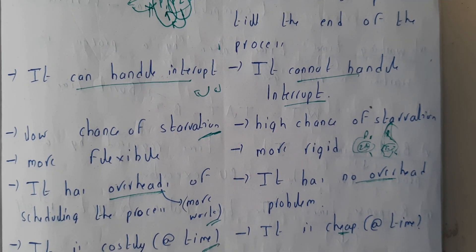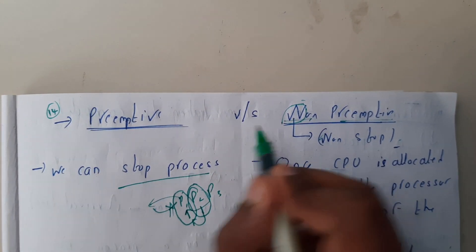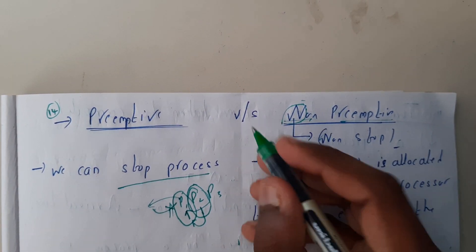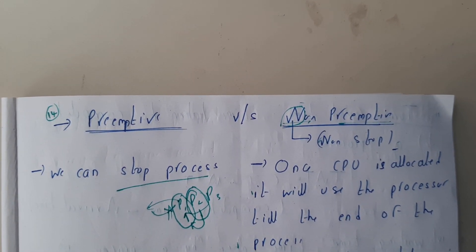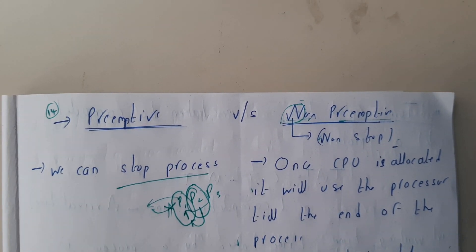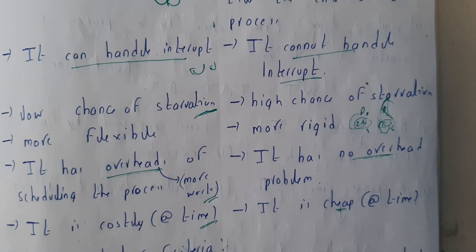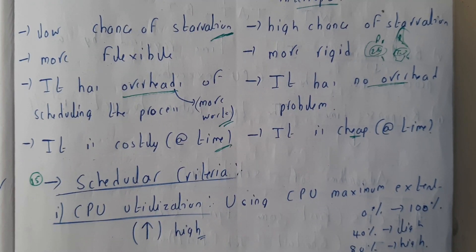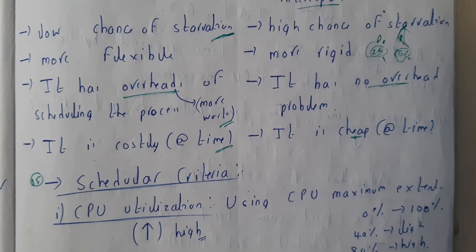I hope everyone got a clear idea on preemptive and non-preemptive. You need to learn this because in exam questions involving an algorithm, they'll say things like 'using preemptive round robin' or 'round robin without preemptive' — so you need to know what these words mean. That's why I covered the differences as a separate video. In the next tutorial we'll go through the scheduler criteria — some key terms used in problems. See you in the next tutorial, thank you for watching.